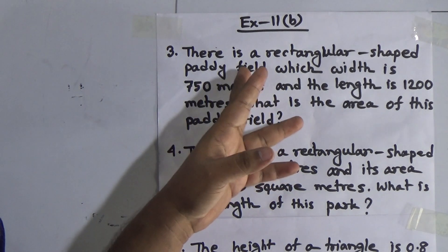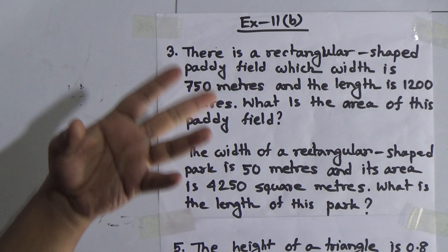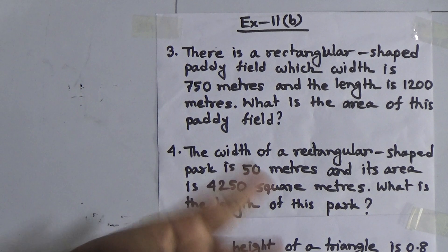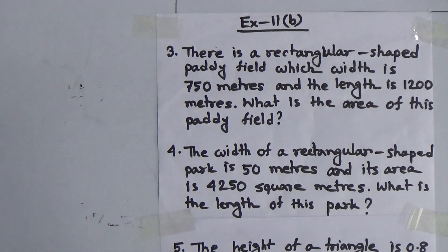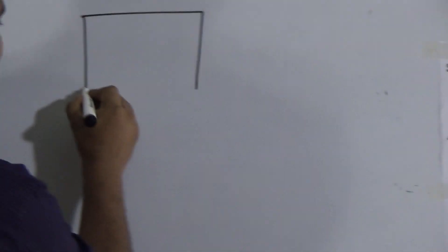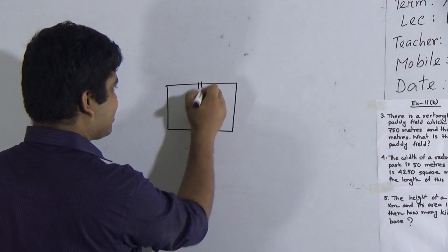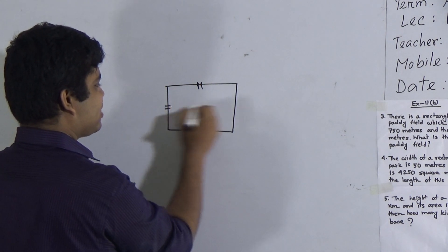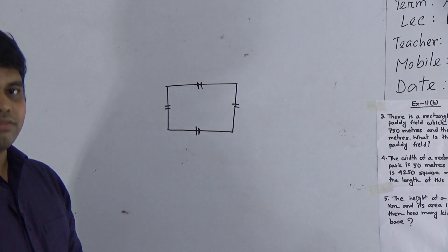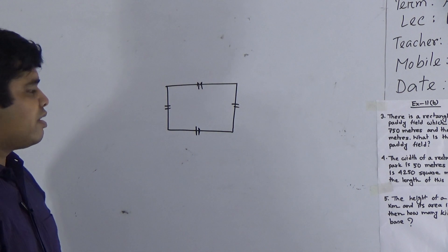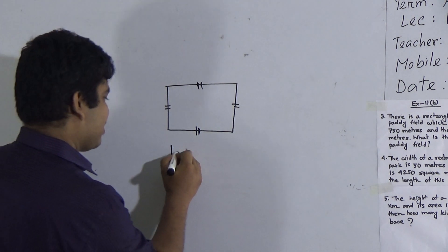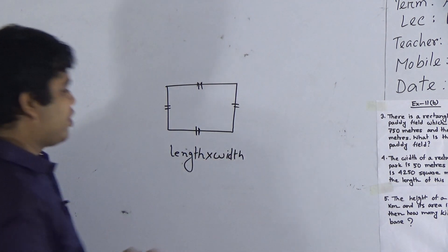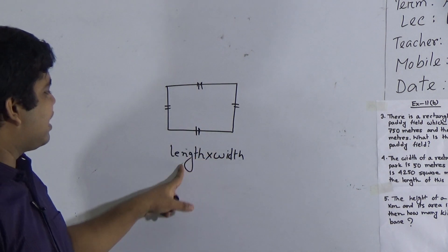At starting of this question, the field is in rectangular shape. So we need to know what is the area of the rectangle. So this is the figure of rectangle. These opposite sides are equal and parallel. All the angles are right angles. And the area of this rectangular field is length multiplied by width. So it is very important to know the area of the rectangle is length multiplied width.